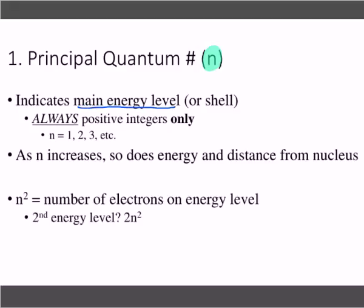This indicates the main energy level. Level and shell are used interchangeably — you'll hear me mix those up, but they mean the exact same thing. For the principal quantum numbers, those main energy levels are always positive integers only.